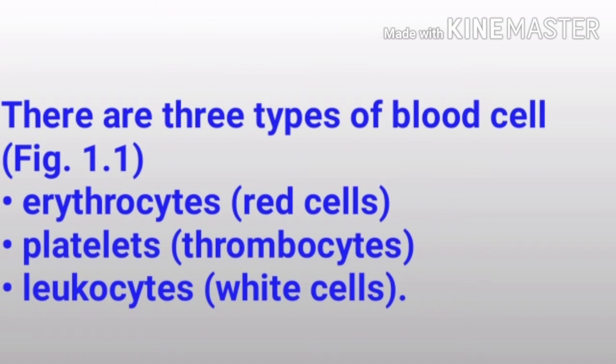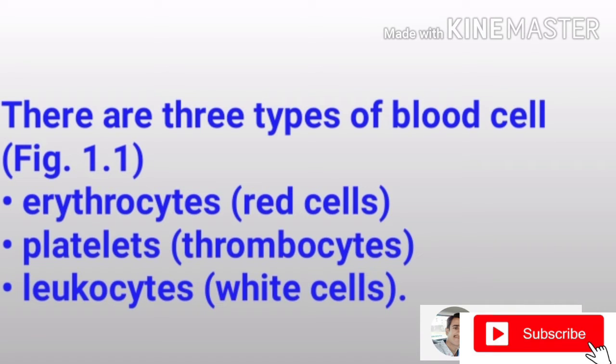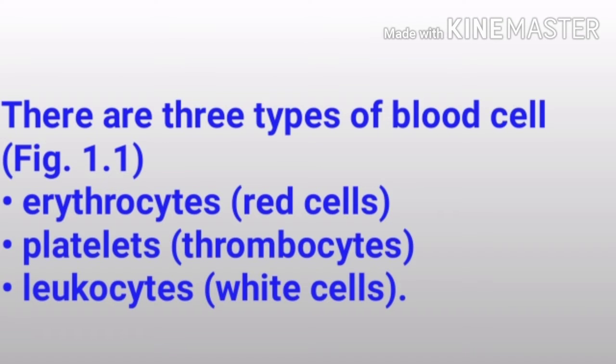There are three types of blood cells: erythrocytes — red cells; thrombocytes — platelets; and leukocytes — white cells.